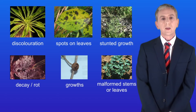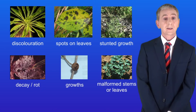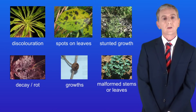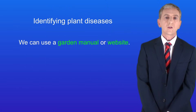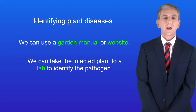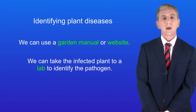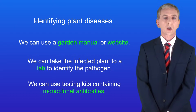All of these are potential symptoms of disease and we can identify the disease in one of three ways. Firstly we can use a garden manual or a website. We can take the infected plant to a lab to identify the pathogen, and finally we can use testing kits containing monoclonal antibodies.